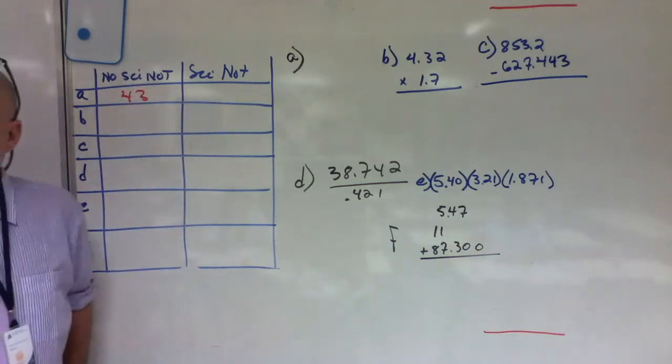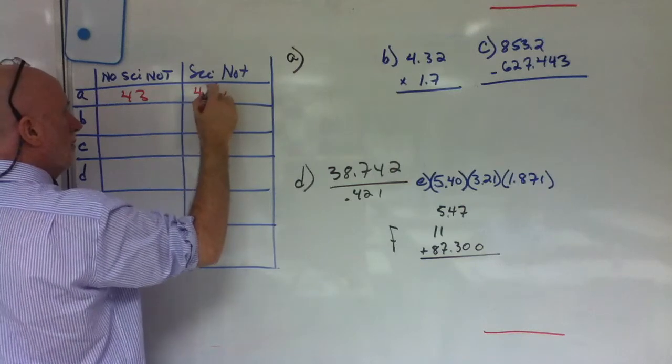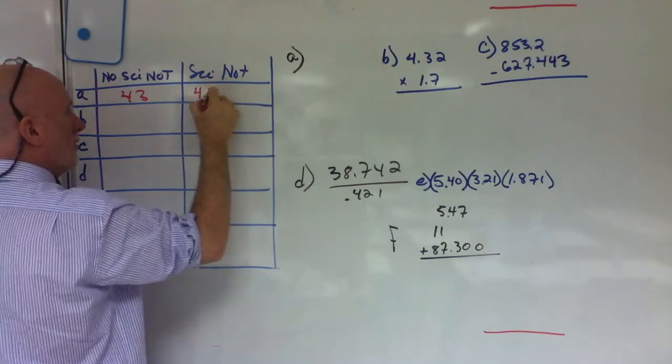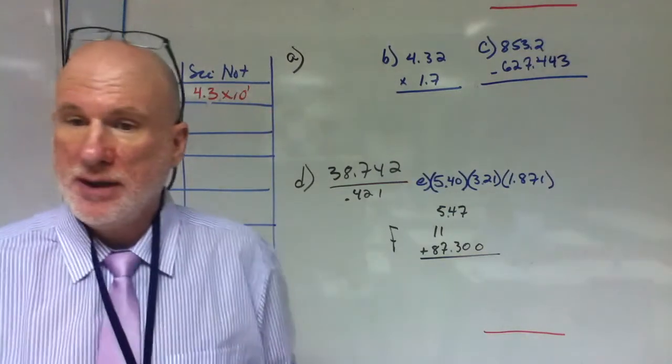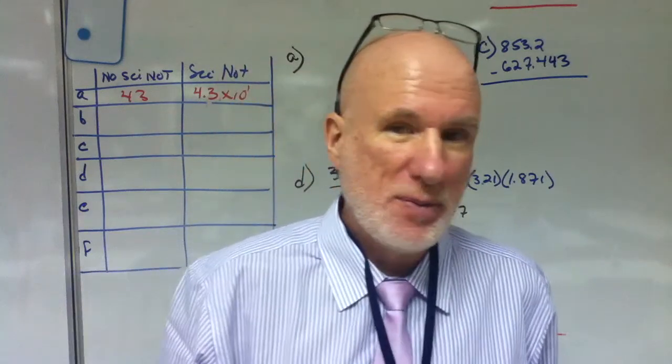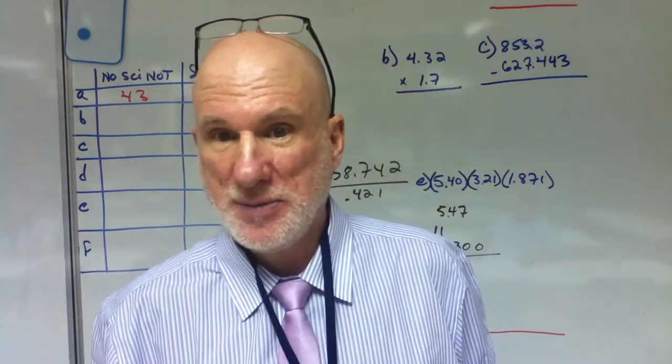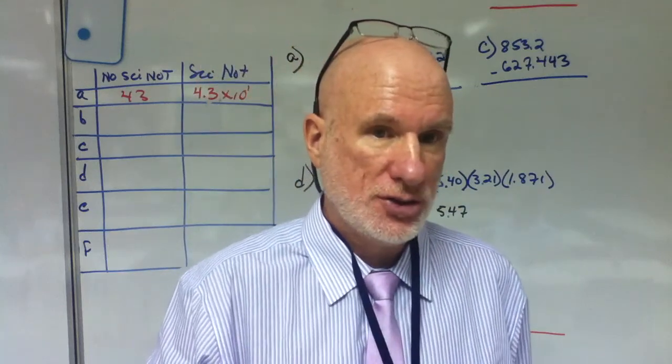And in scientific notation, it would be what? 4.3 times 10 to the 1. Right? Now, you have to draw in that 1, because otherwise people will think you forgot. Did I forget to put in the exponent? That exponent is not understood. Clear? Understood?